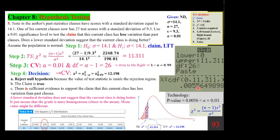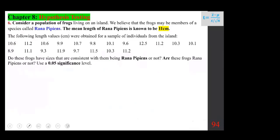Consider a population of frogs living on an island. We believe they may be members of a species called Rana PPNs, whose mean length is told to be 11 centimeters. Length values in centimeters were obtained for a sample of individuals. Do these frogs have sizes consistent with being Rana PPNs? Use a 0.05 significance level. If the test supports 11 cm, they are; otherwise, they are not.